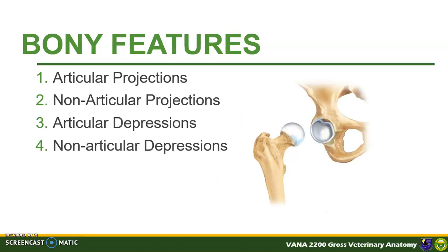Bones have many external features depending on their specific function; they can be a projection or a depression. A projection is any bony feature that protrudes from the major bone part. A depression, in contrast, is a shallow or deep concavity, or depressed part of a bone. Bony features can also be classified either as articular or non-articular. If the bony feature provides functional articulation with another bone, it is considered articular; if not, it is non-articular and can be present for other functions like muscle attachment. We can thus classify bony features into four types: articular projection, non-articular projection, articular depression, or non-articular depression.